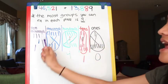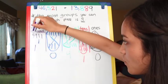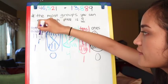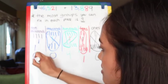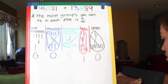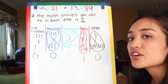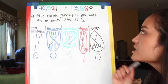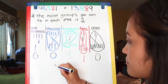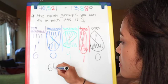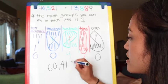And ta-da! Now we can count our last group of ten-thousands — one, two, three, four, five, and six. Awesome! Time for our total: 46,521 plus 13,889 equals sixty thousand, four hundred and ten.